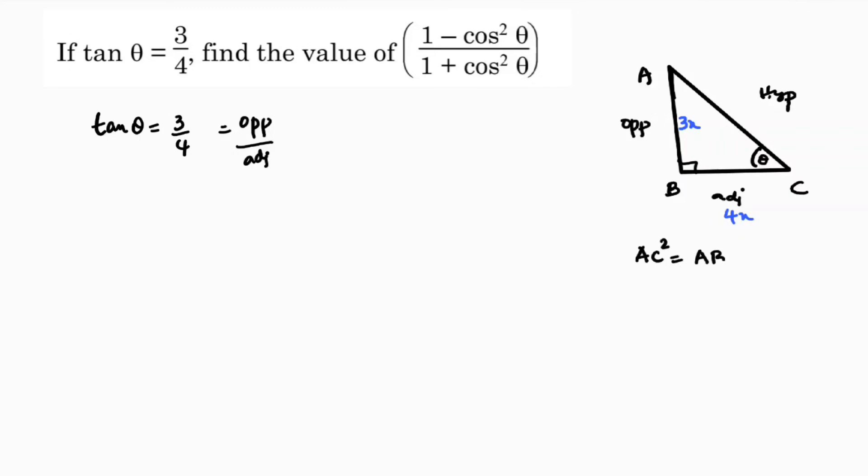So AC² equals (3x)² plus (4x)², which is 9x² plus 16x², equals 25x². So AC² is 25x², therefore AC equals √(25x²) which is 5x.